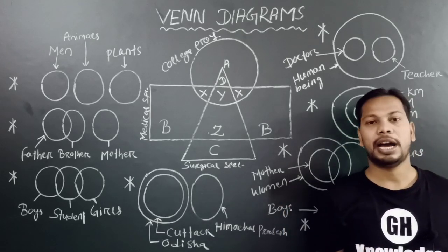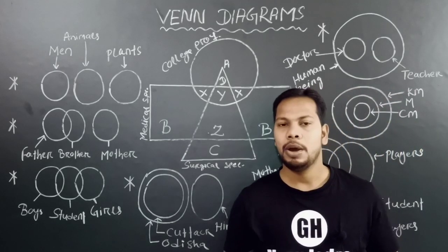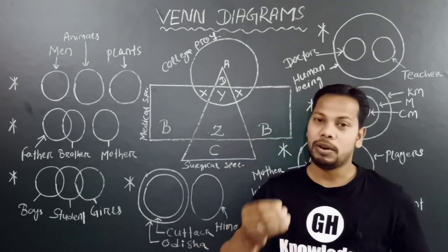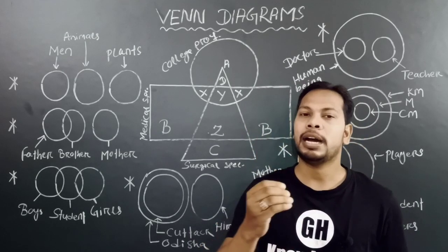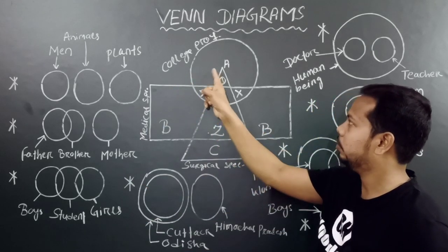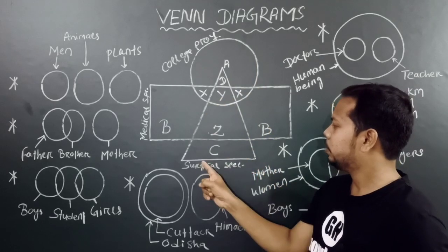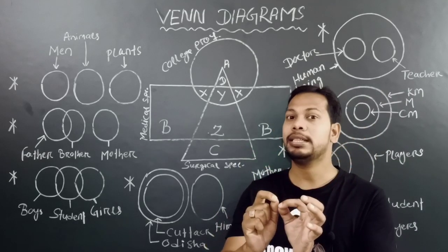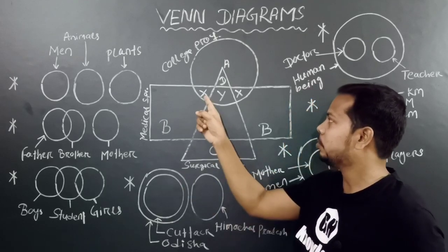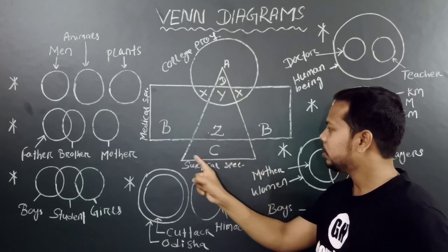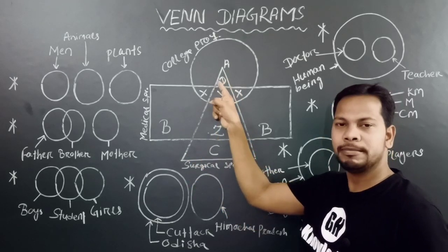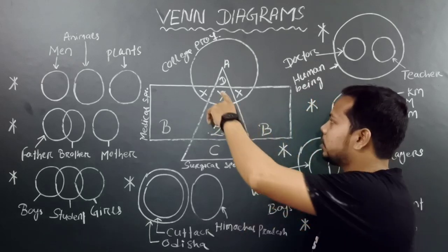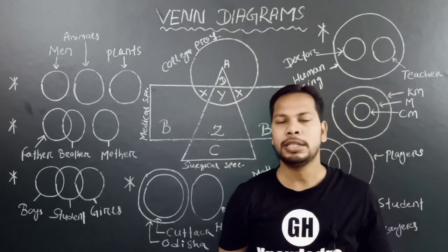College professors who are also surgical specialists are represented by which region? College professor is represented by a circle, surgical specialist list is represented by a triangle. So those who are college professors and also surgical specialists — the answer represents both college professor and surgical specialist.